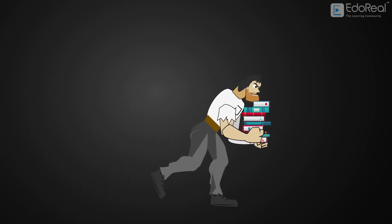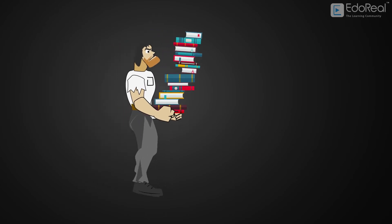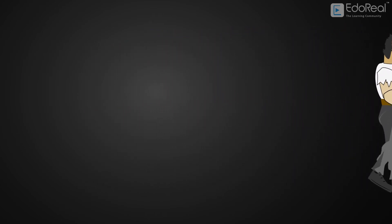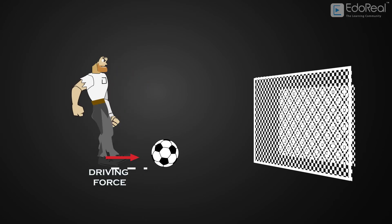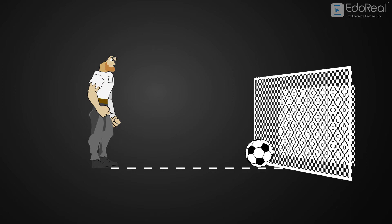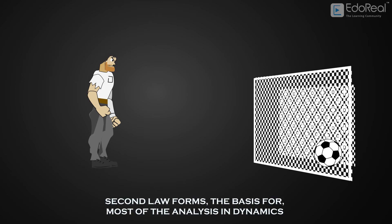Now, if a person carrying a few books can run fast, then what about the same person carrying a huge number of books? He will run slowly. Hence, acceleration is inversely proportional to the object's mass. The change of motion is proportional to the imposed driving force and occurs along a straight line in which the force acts. The Second Law forms the basis for most of the analysis in dynamics.